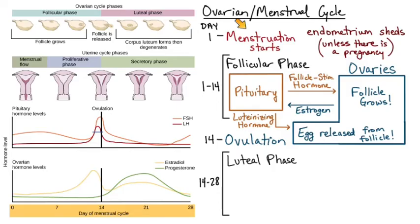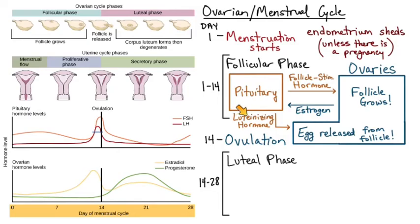Quick recap of the follicular phase: menstruation marks day one; the pituitary releases FSH to stimulate the ovarian follicle to grow; as the follicle grows it produces more estrogen, which signals the pituitary that it's ready; the pituitary then releases LH, which is the go-ahead for the egg to be released from the ovary into the fallopian tube for a chance at fertilization.